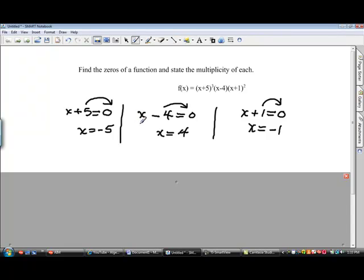Those are the three zeros of the function. Negative 5 is a zero, 4 is a zero, and negative 1 is a zero. That means that this function crosses the x-axis at each of those points on the graph.